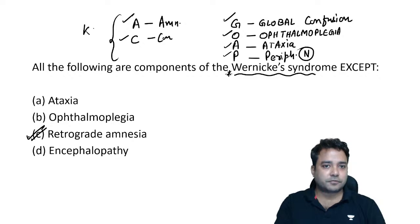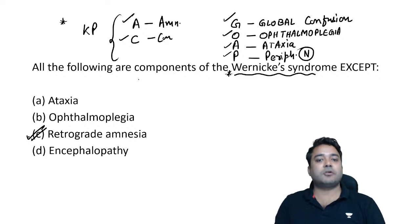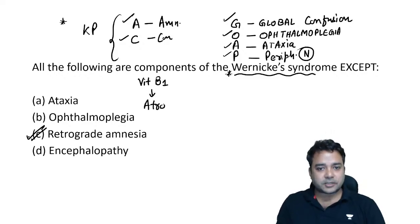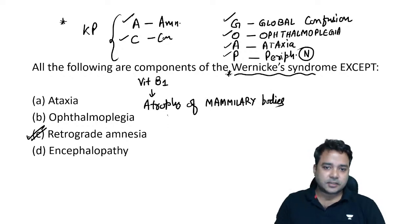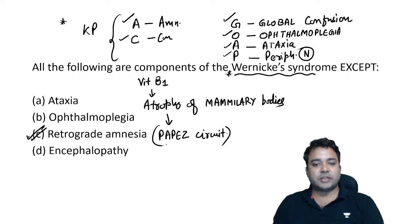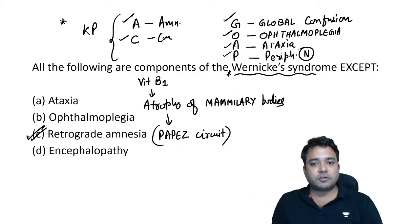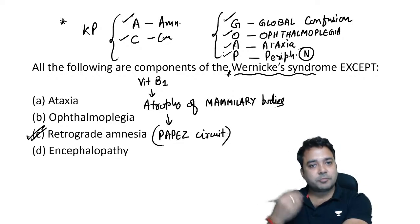After Wernicke encephalopathy, the patient switches on the AC — meaning they now present with amnesia and confabulation, diagnosed as Korsakoff psychosis. These are two very important complications of chronic alcoholism. They occur because vitamin B1 deficiency causes atrophy of mammillary bodies at the base of the brain, leading to a defect in the Papez circuit involved in memory consolidation — affecting the mammillothalamic tract and hippocampus.